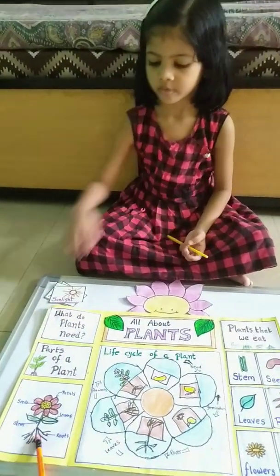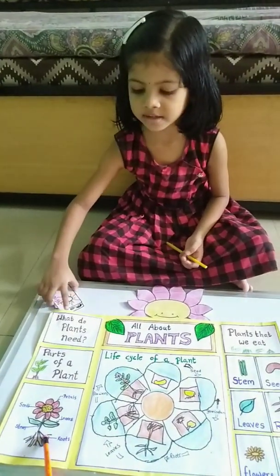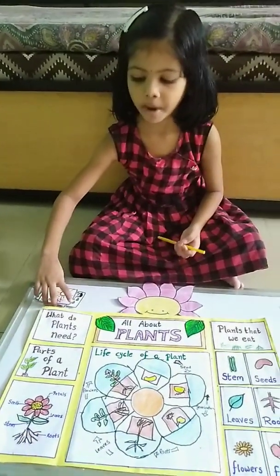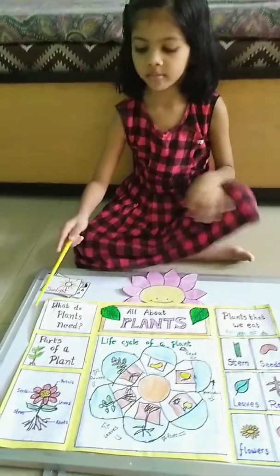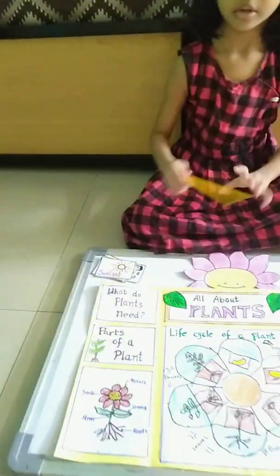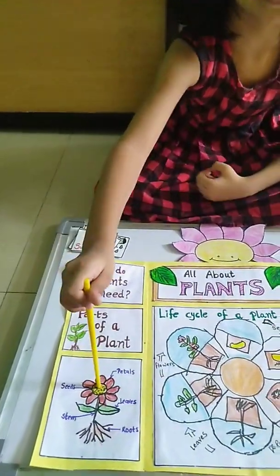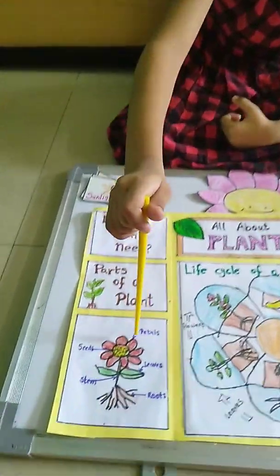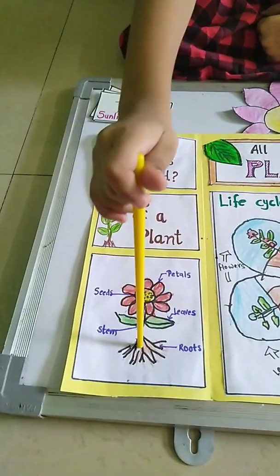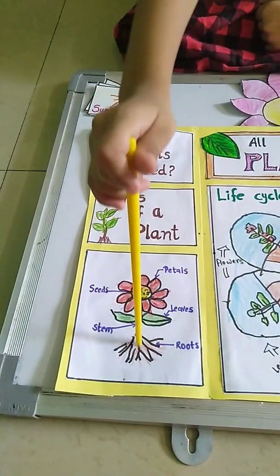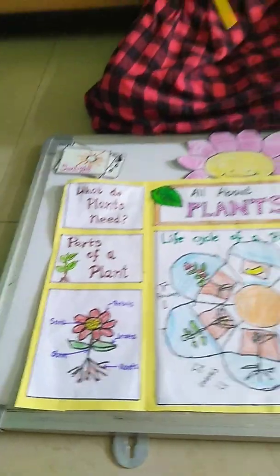What is this drawing? Parts of the plant. Please tell me the parts of the plant. Seeds. Okay. Petals. Leaves. Stem. And roots. And roots. Okay. Good.